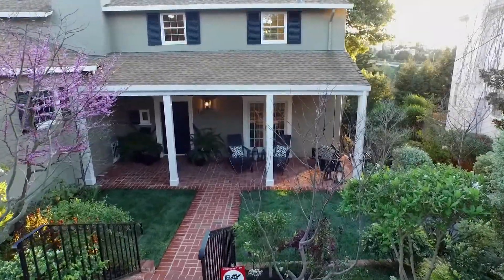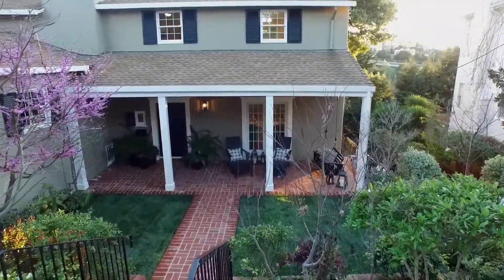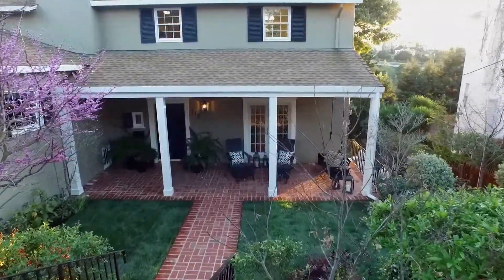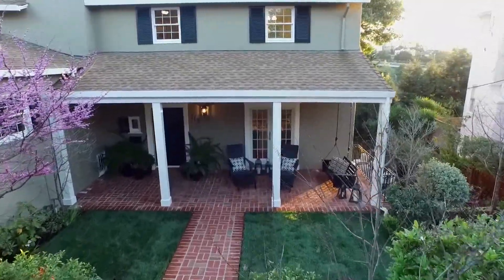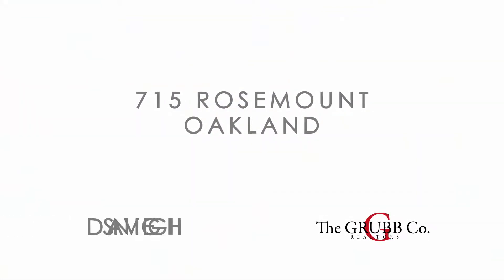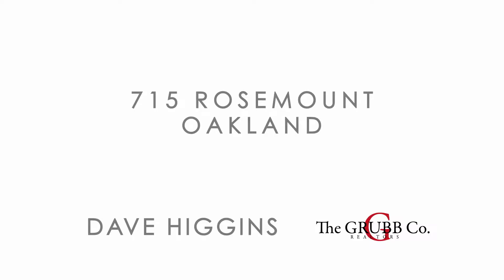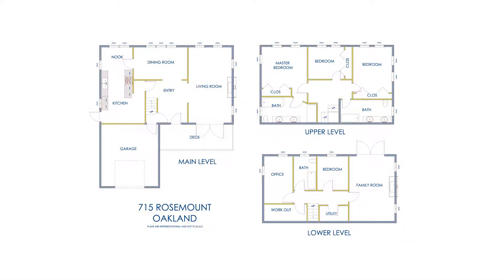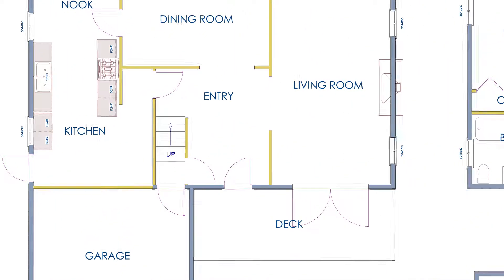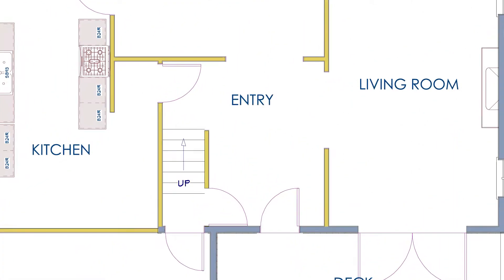Every once in a while, a special property comes to market. 715 Rosemount in Crocker Highlands is one of these properties. Offered for sale by Dave Higgins of The Grub Company, 715 Rosemount is a four bedroom, three and a half bath home that has it all — location, style, and elegance.